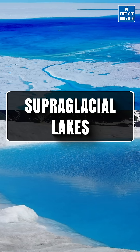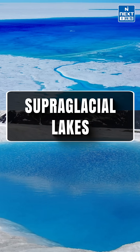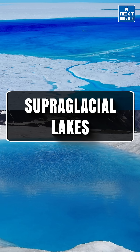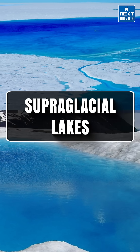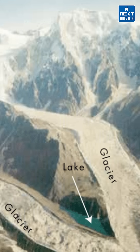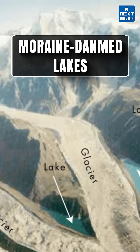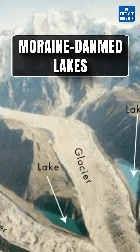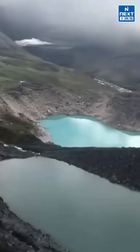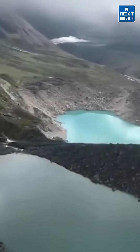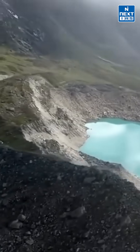What are the types of glacial lakes? Supraglacial lakes are formed in depressions on glaciers from meltwater, and are highly prone to melting in the summer months. Then there are Moraine-Dammed Lakes, formed by meltwater at the toe or snout of a glacier, dammed by loose debris or ice cores, making them prone to sudden failure.